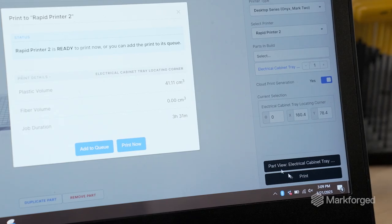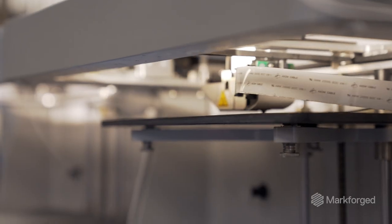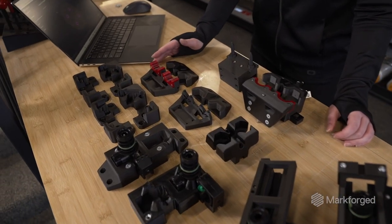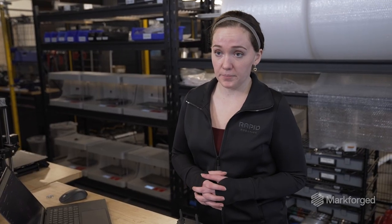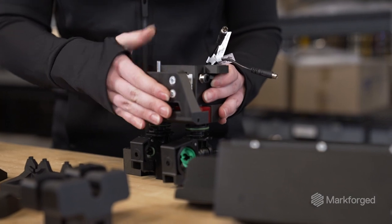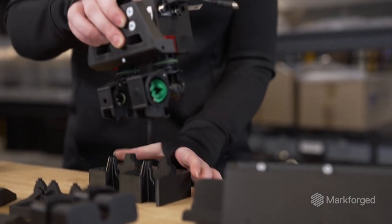3D printing allowed us to try a bunch of different things quickly. The whole stage of the gripper iterations that you see here is in less than a month and a half. It comes in on the end of the robot and grabs the parts from that nest like so.